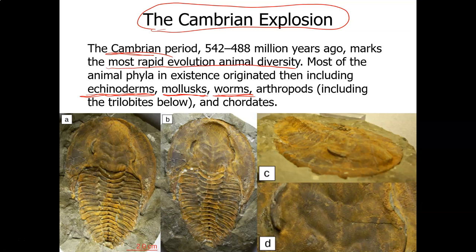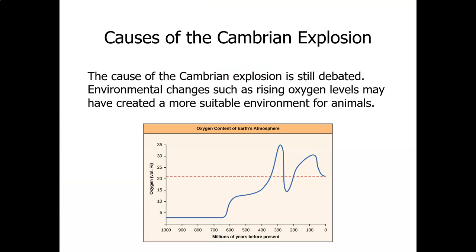The arthropods are the jointed leg animals. So the trilobites that you see in picture A and B are arthropods. All of these are pictures of trilobite fossils. And the chordates, which primarily are animals that have a backbone. There are a few exceptions, but most have a backbone.